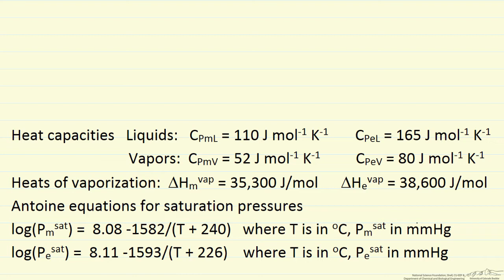A couple of things to keep in mind in this solution: I'm going to work in pressure bar, that's what the problem states. The Antoine equations I found are in millimeters of mercury, so I'm going to have to correct for that. I'm also going to work in Kelvin, but the Antoine equations are in degrees centigrade, so I'll have to correct for that also in my final equations. I'm going to solve this numerically and in separate screencasts show numerical solutions to the final values.